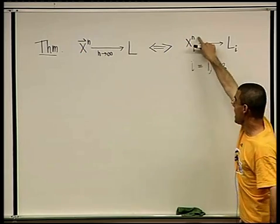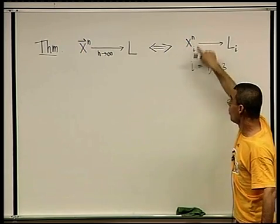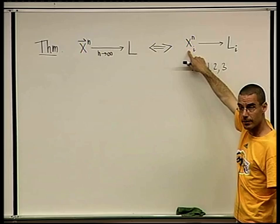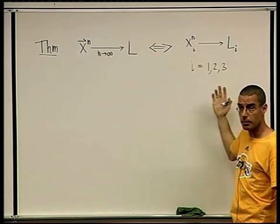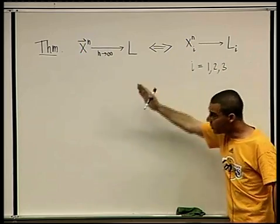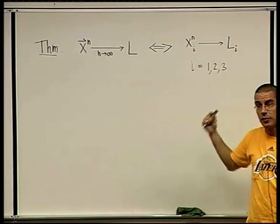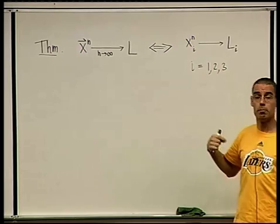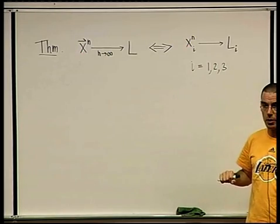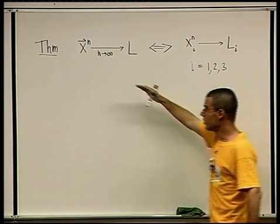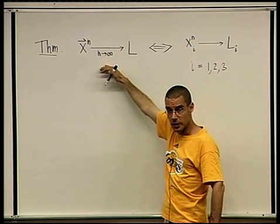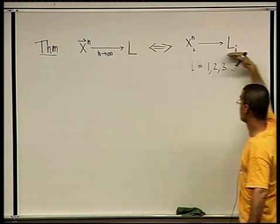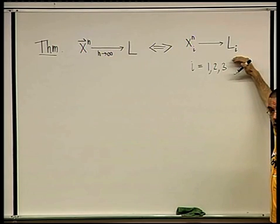So xn,i, xn1 is the first component, xn2 is the second component, xn3 is the third component. So a sequence of points converges if and only if it converges component-wise. So the theory of converging sequences in R3 reduces to the theory of convergence in R.